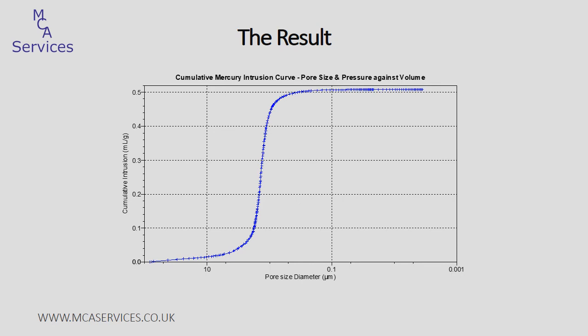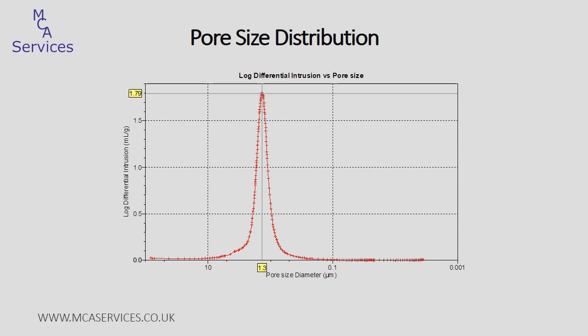At the end of the analysis, we get the cumulative intrusion curve — pore size diameter in microns against cumulative intrusion volume, or pore volume. This shows two essentially flat regions where there's no mercury intrusion into pores, but the region between around 2.5 microns down to 0.5 microns is near vertical, and this is where mercury is being intruded into pores. An alternative presentation — the log differential intrusion against pore size — is perhaps a little easier to understand, and quite clearly shows that the pores within this sample range from 1.6 microns down to 0.5 microns, centred at around 1.3 microns.